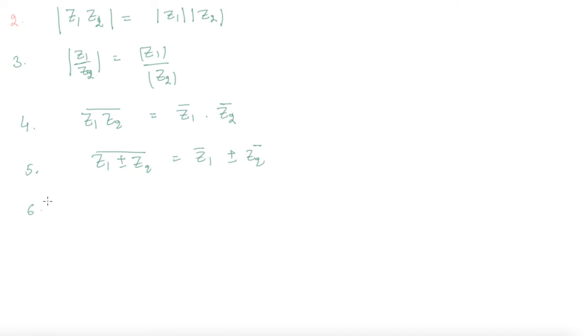And the last but not the least is z1 by z2 bar equals z1 bar by z2 bar, where z2 should not be equal to zero. Similarly here, z2 should not be equal to zero. Students, these are some of the properties based on conjugate and the modulus of complex numbers.